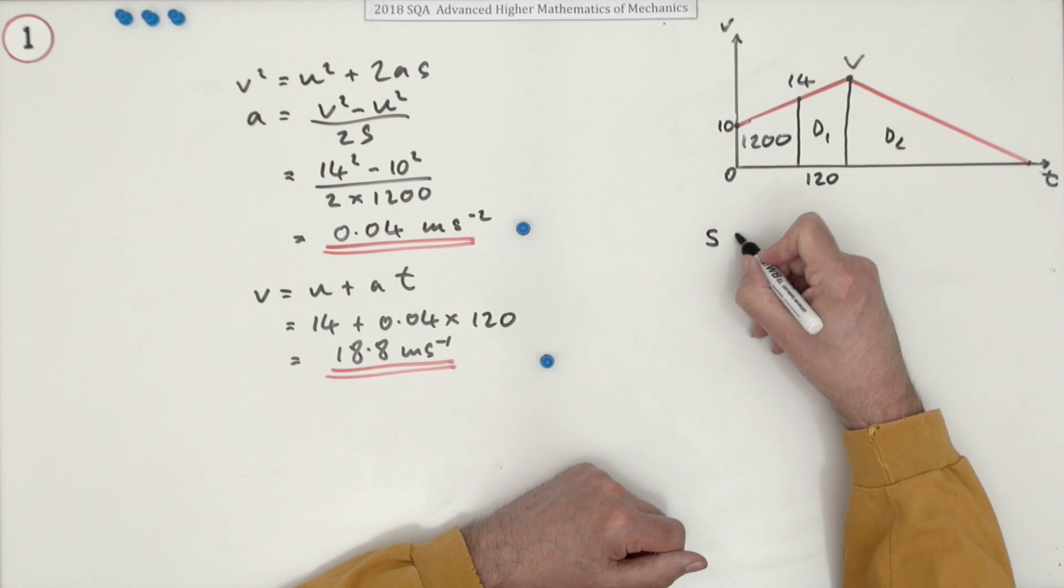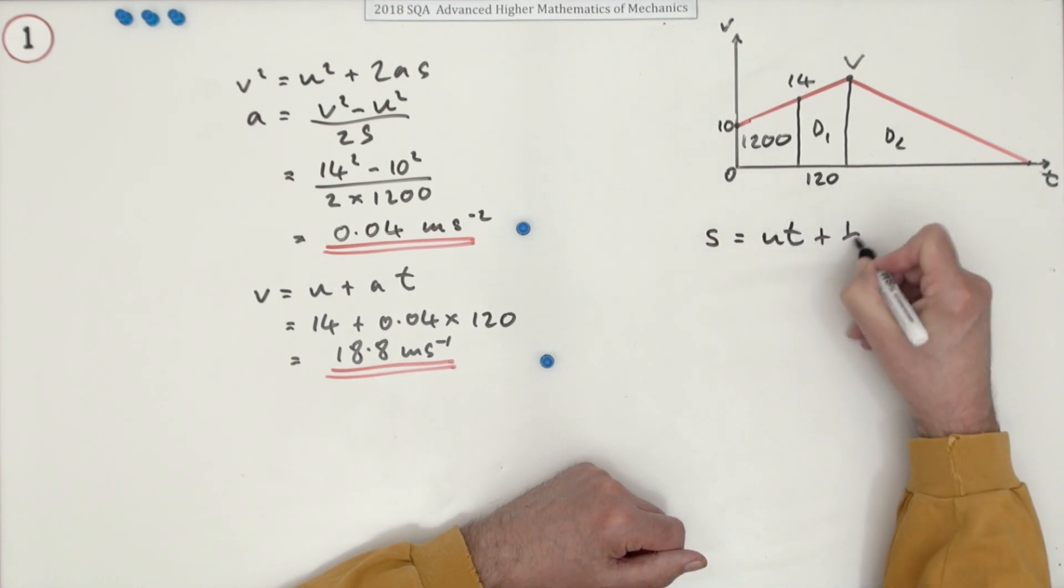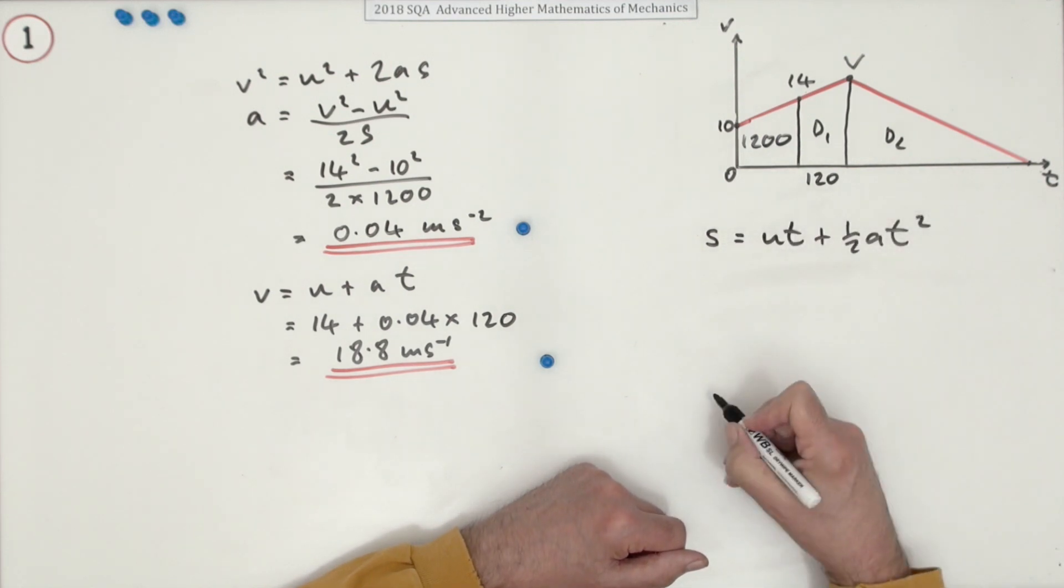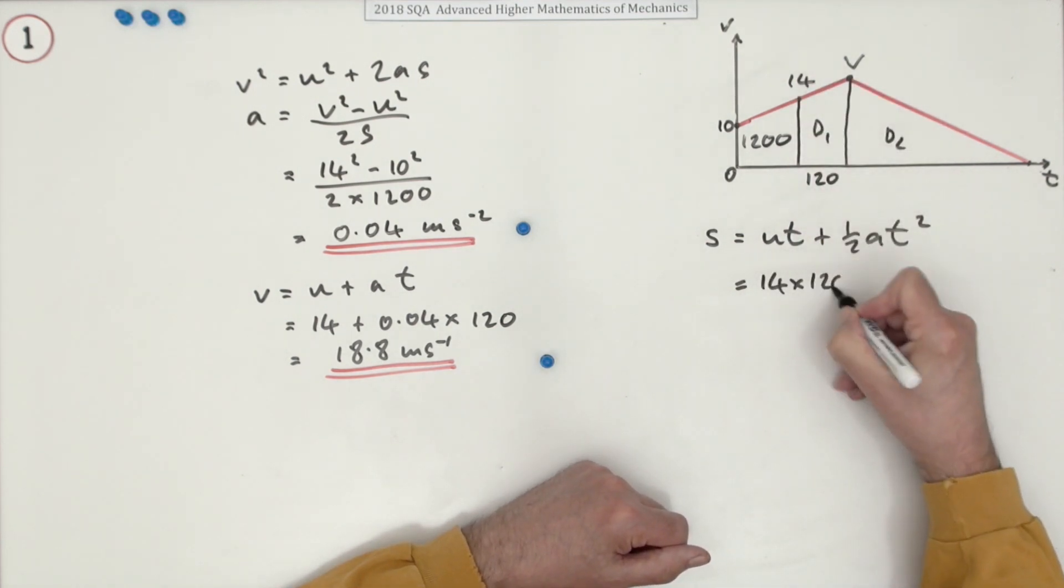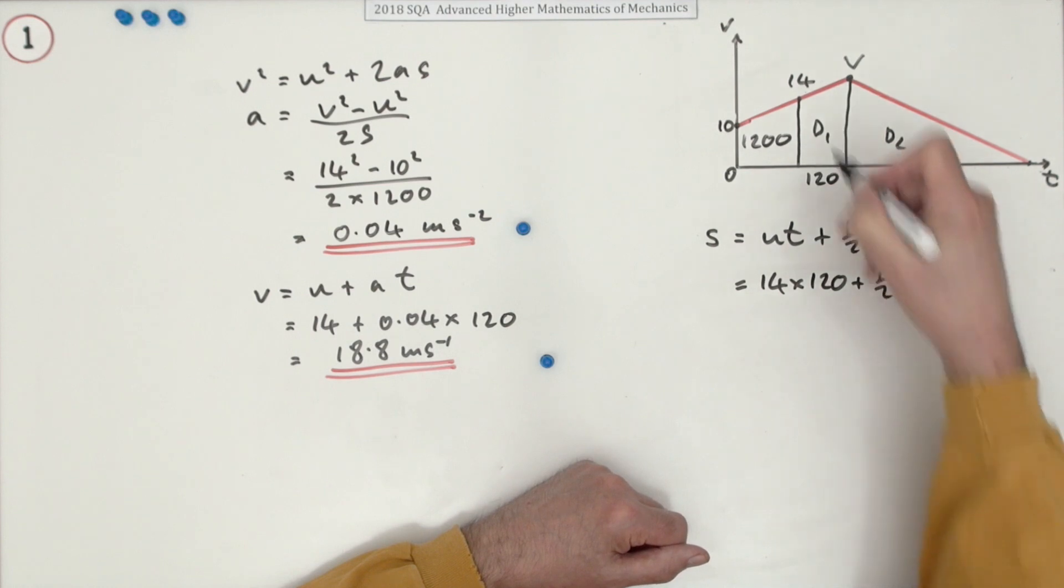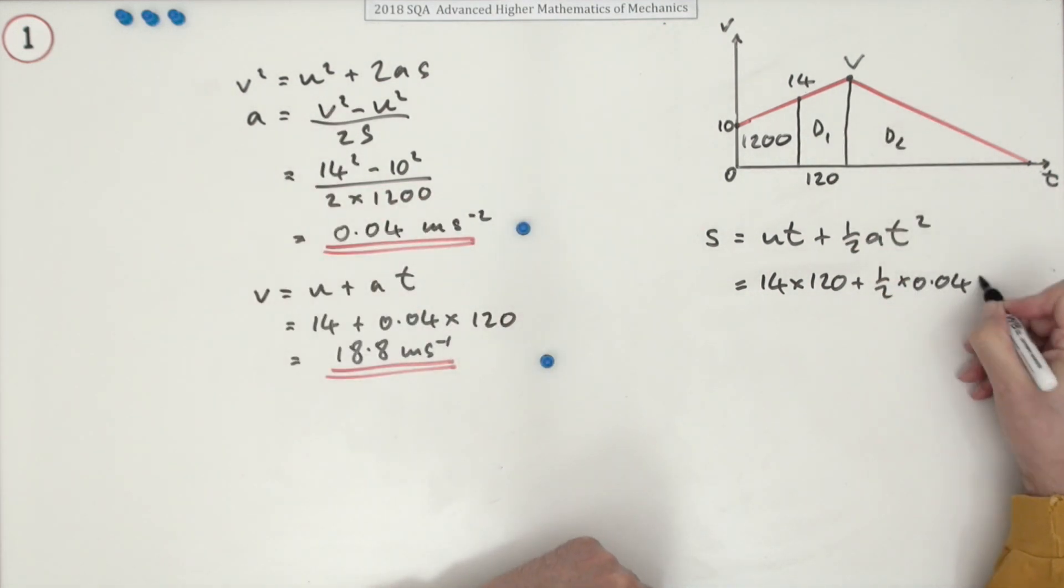So we can just use s equals ut plus a half at squared. So initial speed was 14, the time was 120, the acceleration was 0.04, the time was again 120 seconds. Pop it in your calculator.